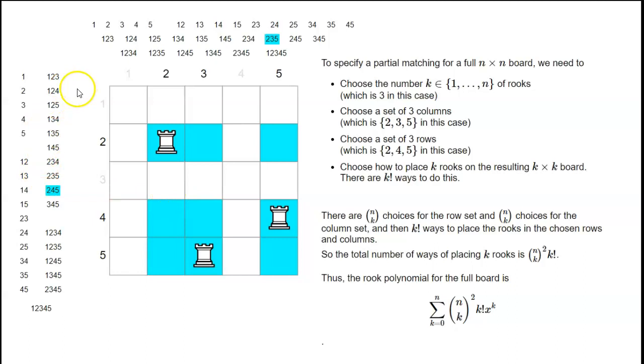How many choices do we have for that? We had five choose three ways to choose the column set, and five choose three ways to choose the row set, and then three factorial ways to actually place the rooks once we've decided which rows and columns they're going in.